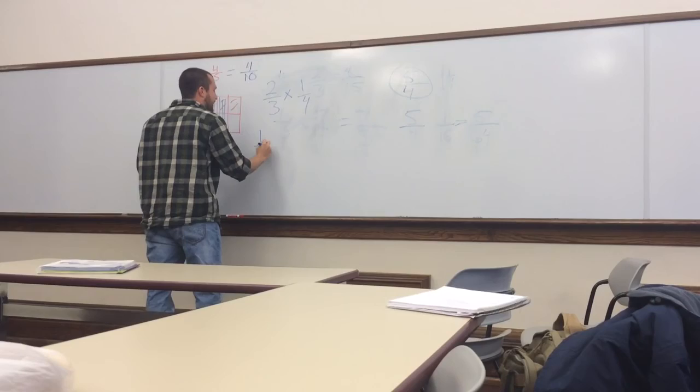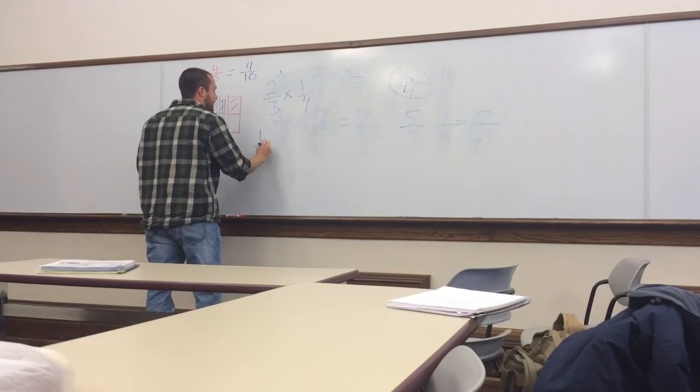So let's go two-thirds times one-fourth and one-half times one-twentieth. Go ahead and partner up. Go ahead and work through it. When you're done, put your pencils down and raise your hand.